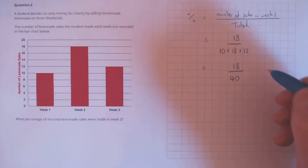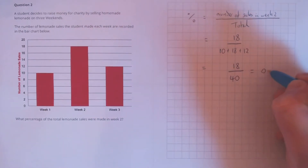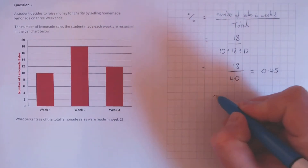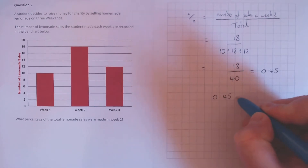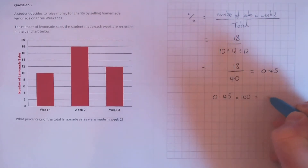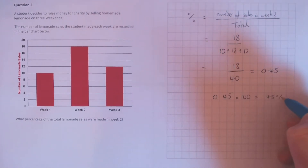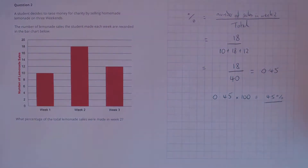If we calculate that, we get 0.45. And to make it into a percentage, we need to multiply by 100, so that would be 45%.